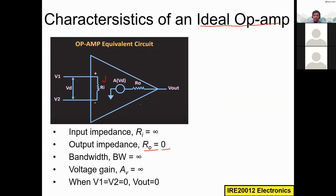The voltage gain Av is also infinity — that's why we see very large values for a general operational amplifier, for example 10 to the power of 6. When v1 equals v2 equals zero, the output is also equal to zero. These are some special characteristics of the operational amplifier.